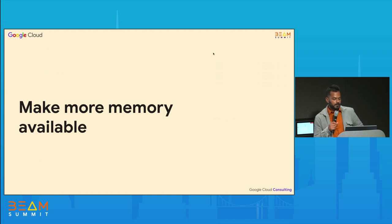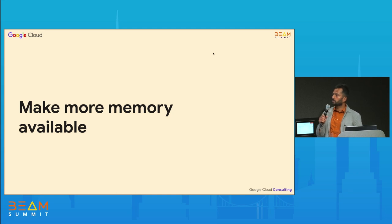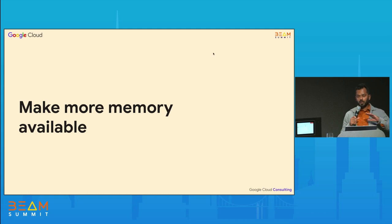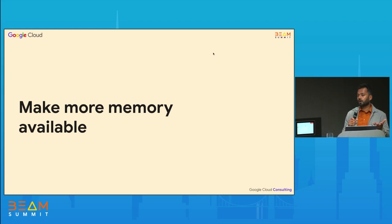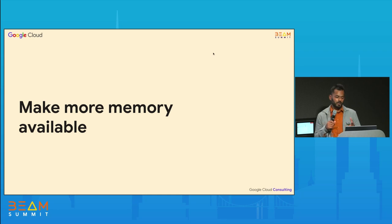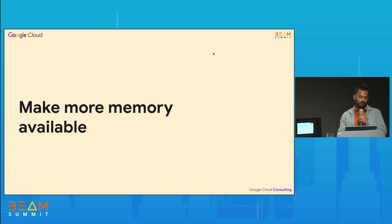Now I'll talk about what options you have in Dataflow to make more memory available. These options should be tried if you have already written a very efficient Beam pipeline and are still running out of memory, meaning your pipeline inherently needs more memory capacity.